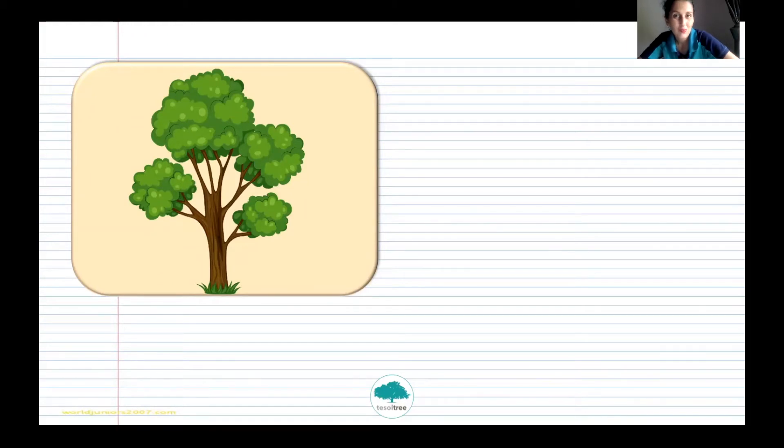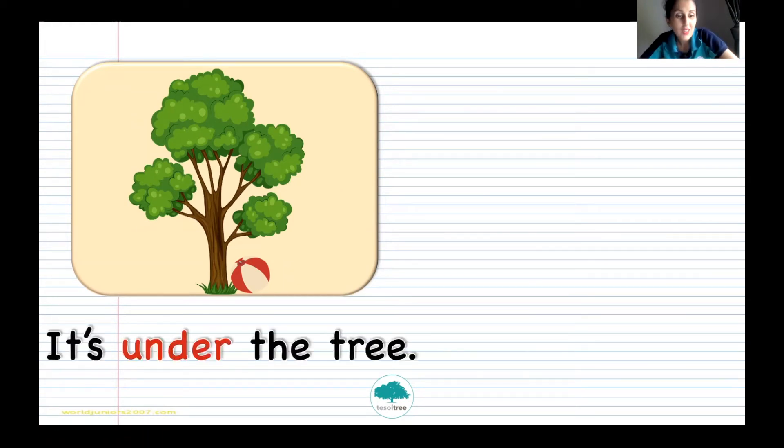Let's continue learning. Do you remember? We have been learning about prepositions. I want you to look at the picture. What do you see? This is a tree and a ball. And where is the ball? Do you remember? It's under the tree. Yes, very good. Can you repeat? It's under the tree.